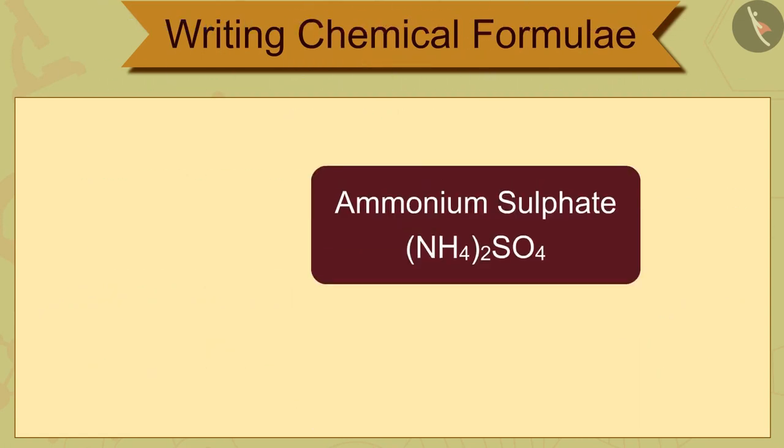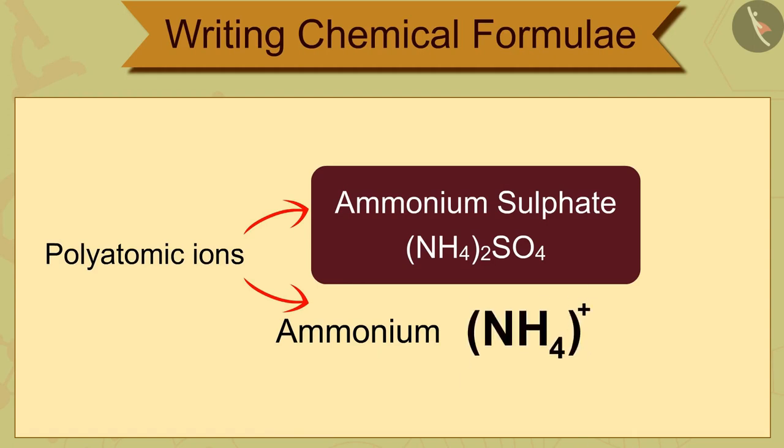the formula for ammonium sulfate is (NH4)2SO4. Here, the number of polyatomic ions ammonium, NH4 plus, is 2. So, we write it in a bracket.